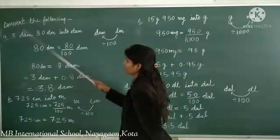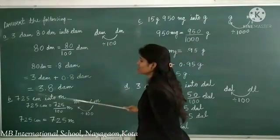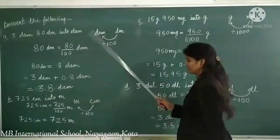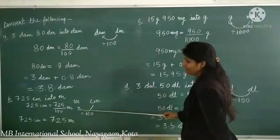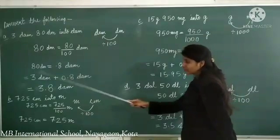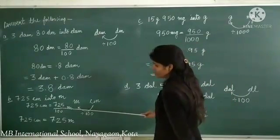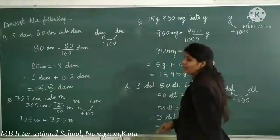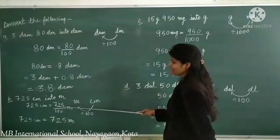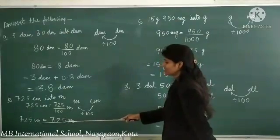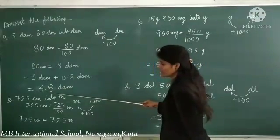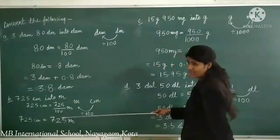Part B: convert 725 centimeters into meters. To convert centimeter to meter we divide by 100. So 725 ÷ 100: dividing by 100 shifts the decimal two places to the left, giving 7.25. So 725 centimeters equals 7.25 meters.